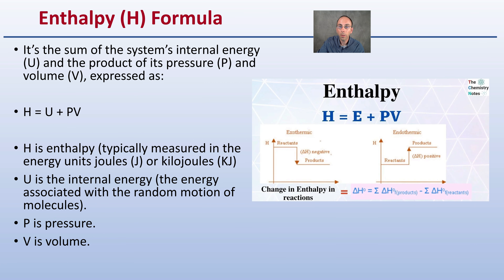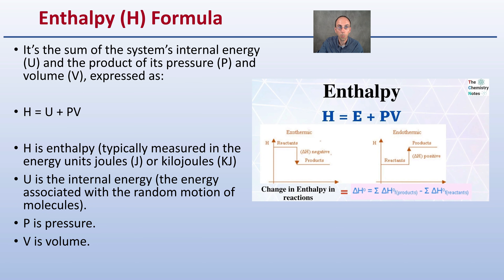The enthalpy formula is the sum of the system's internal energy, referred to as U, and the product of its pressure, P, and its volume, V — expressed as H equals U plus PV. H is enthalpy, typically measured in joules or kilojoules. U is the internal energy, essentially the energy associated with the random motion of molecules. P equals pressure and V equals volume.